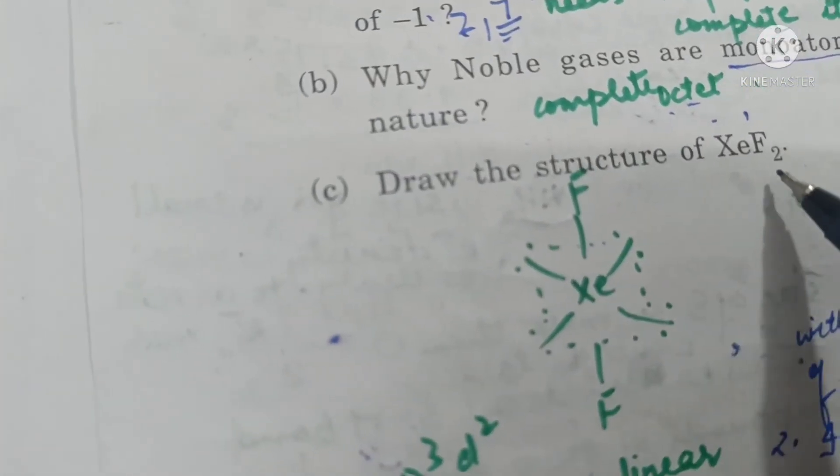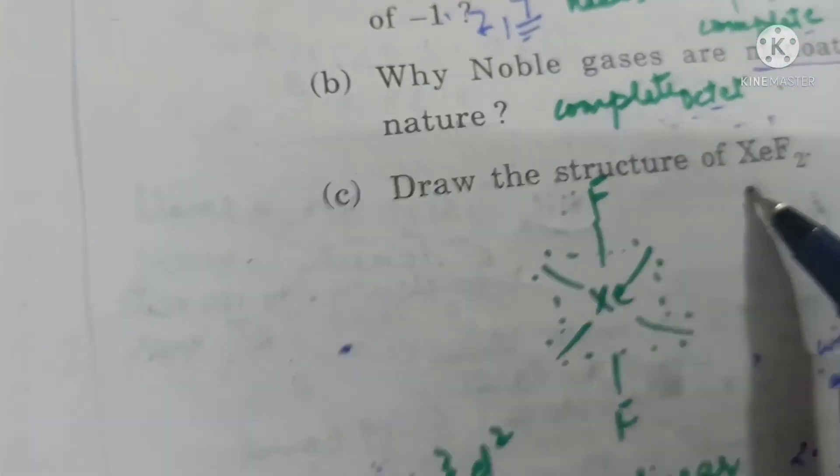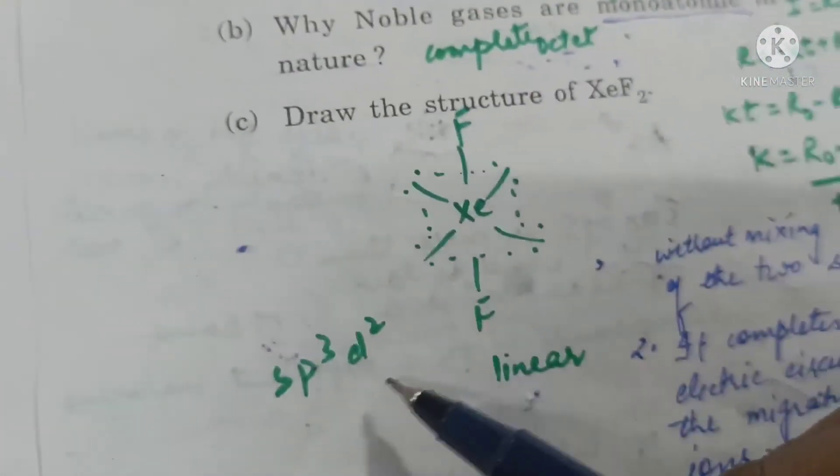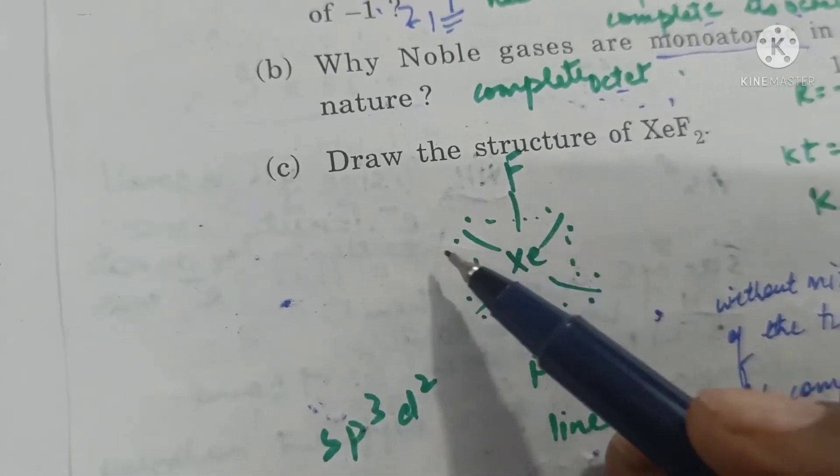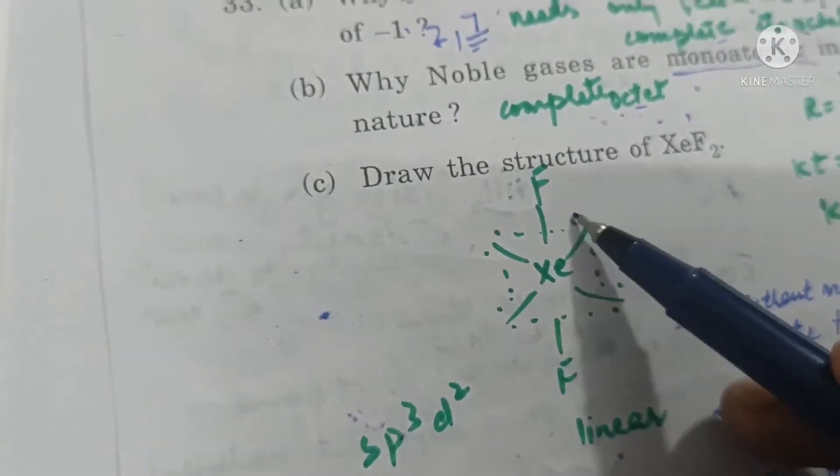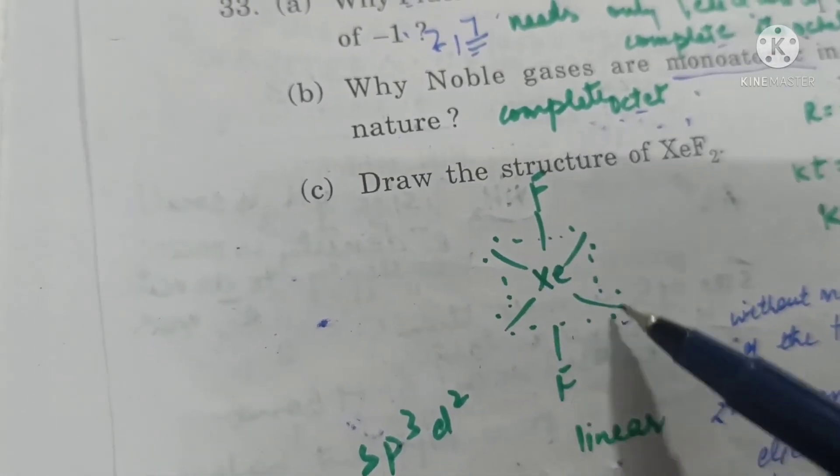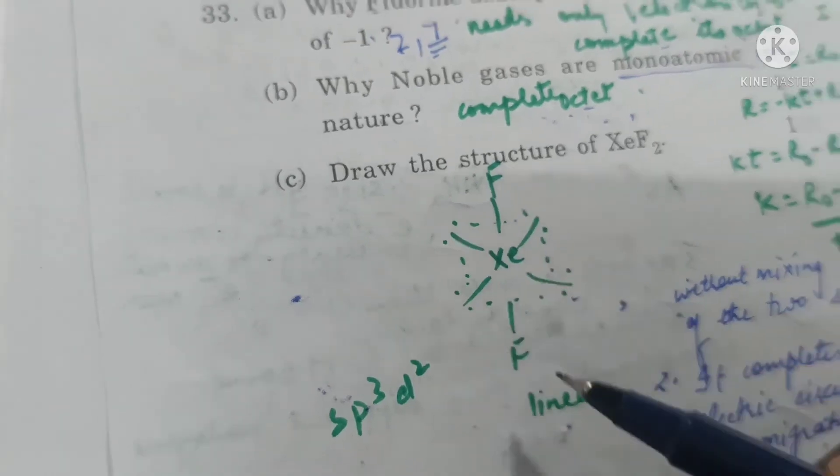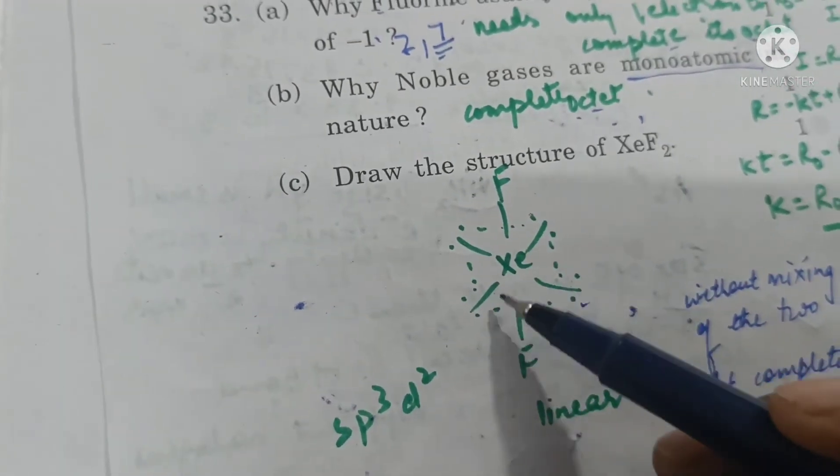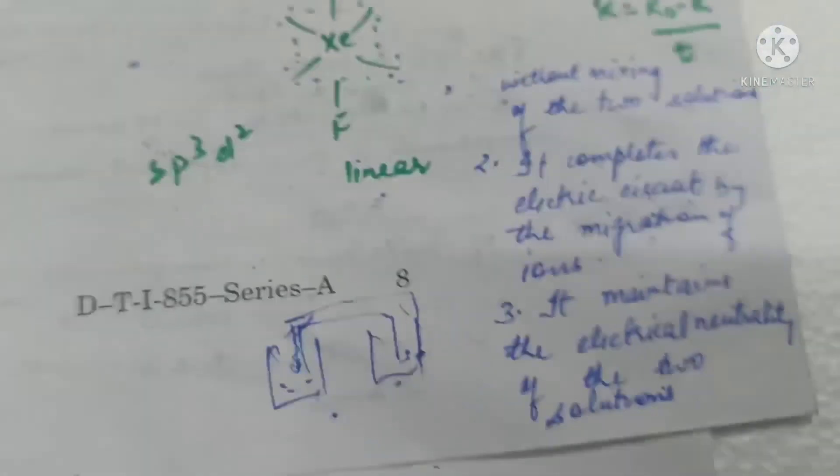Draw the structure of xenon fluoride. In case of xenon fluoride, there is sp3d2 hybridization. But of the 6 octahedral positions, 4 in a planar region are occupied by lone pair of electrons. So the geometry is reduced to linear structure. Xenon fluoride is linear in nature.